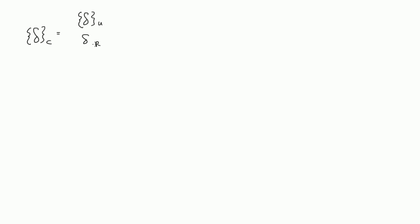One more thing before we start a stiffness method example. We have the stiffness matrix from the last couple videos, but we also need a few more matrices. The first is delta_C, where C means complete. Delta_C is delta_unrestrained over delta_restrained — the entire deformation column vector, with all unrestrained deformations at the top and all restrained deformations at the bottom.